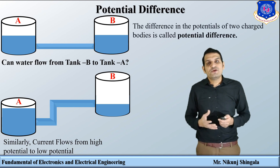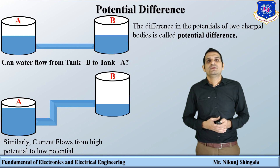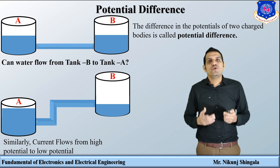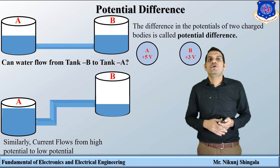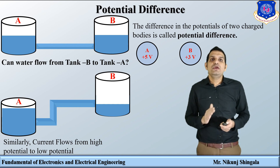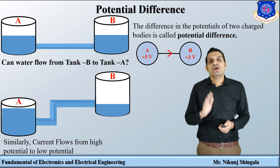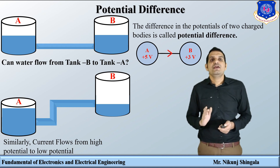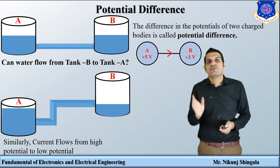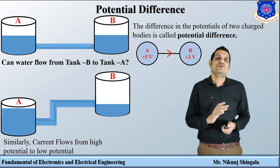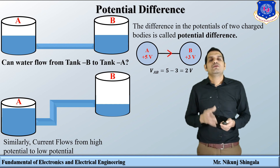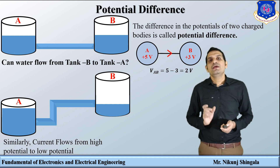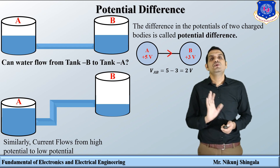Potential difference is the difference in potential between two charged bodies. Suppose there is a conductor with two points A and B. If body A has a potential of +5 volts and body B has a potential of 3 volts, then the potential of body A is higher than body B. So current flows from charged body A to charged body B. The potential difference VAB equals 5 minus 3, which is 2 volts.